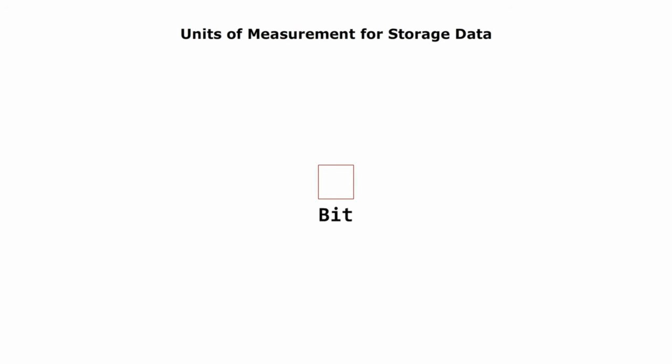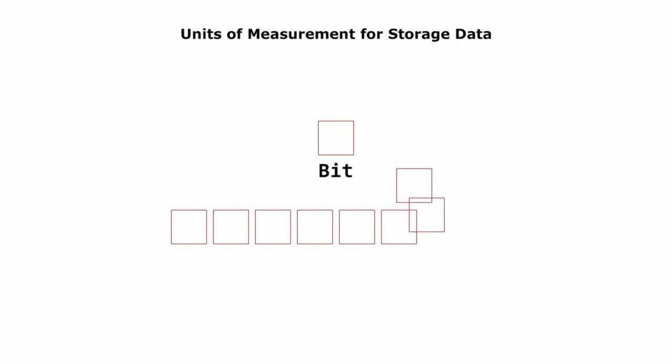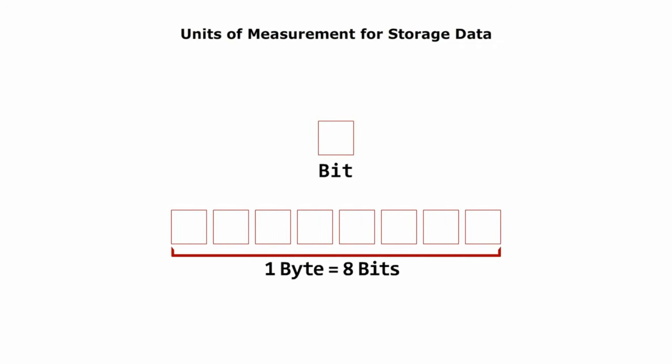A bit is the smallest data unit in computing and digital technology. It can represent one of two values, zero or one, and is the fundamental building block of digital information. A byte is a fundamental unit of digital storage. One byte is equal to eight bits. A byte can represent a single character, such as a letter or number.